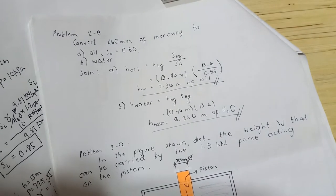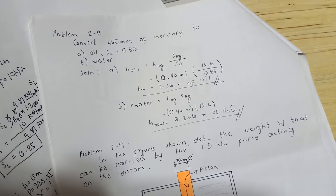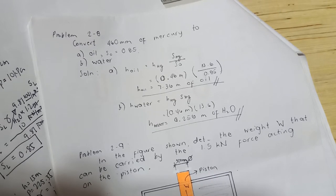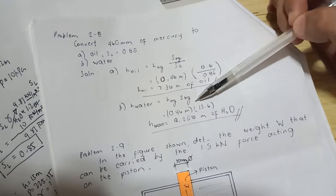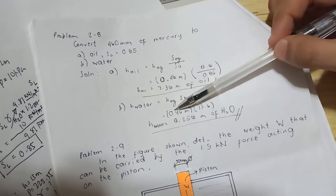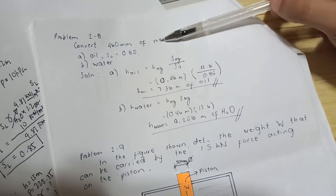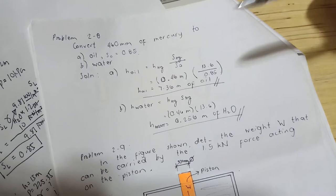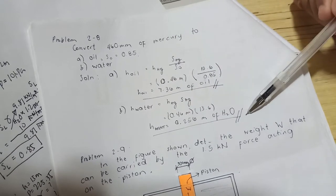For water, simply multiply the height by the specific gravity of mercury. So 0.46 meters times 13.6 gives a height of 6.256 meters of water. The conversion topic is straightforward.